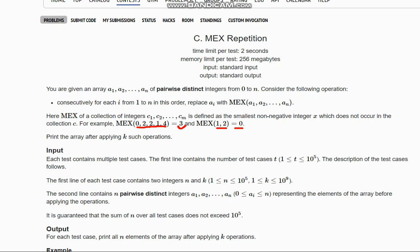Like this we need to calculate the MEX of the elements and we need to print the array after applying k such operations. The input here is the pairwise distinct integers a1 to an, and we also have n and k, where n is the number of elements and k is the number of operations we need to do.